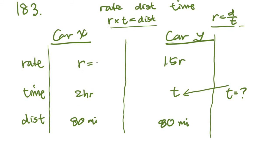And the rate is going to be 40, right? And we know that car Y, the rate of that is 1.5 of 40, so that's going to be 60. And time is going to be distance over rate. So the distance is 80 and the rate is 60, and the time is going to be 80 over 60, which is 8 over 6, which is 1 and 1 third when you simplify that. And that is answer C.